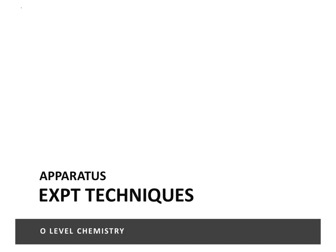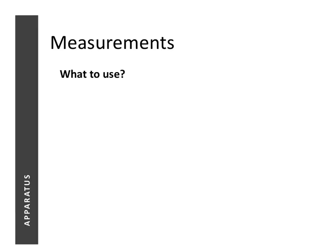In this chapter, we're going to look at the experimental techniques that are being used in science, in particular, chemistry. In science and in chemistry, there are certain things that we commonly measure, and we call them physical quantities.